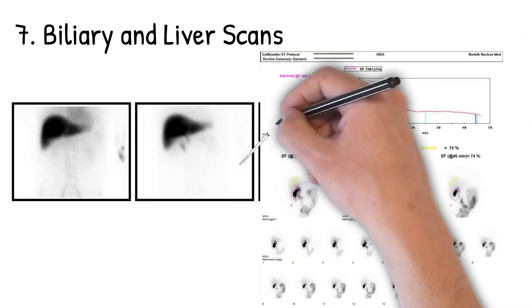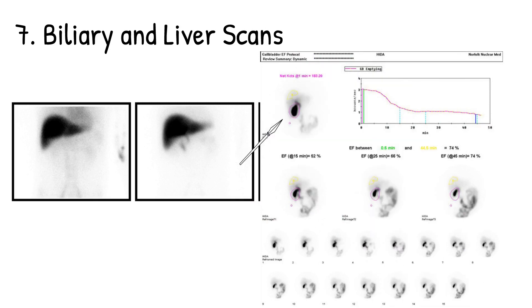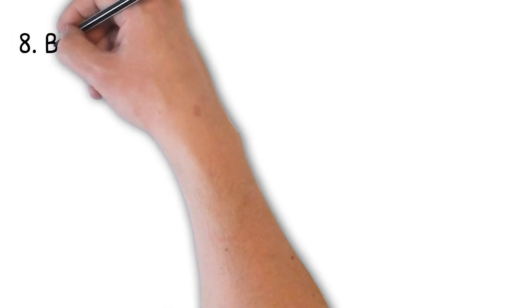Of course, we can quantitate that, drawing regions of interest around a gallbladder that does exist, and giving the patient a fatty meal or the equivalent in medication, and actually quantitating how the actual gallbladder empties looking at clearance.